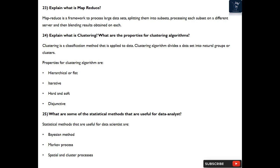Question 24: Explain what is clustering? What are the properties for clustering algorithms? Clustering is a classification method that is applied to data. Clustering algorithm divides a data set into natural groups or clusters. Properties for clustering algorithms are: hierarchical or flat, iterative, hard and soft, disjunctive.